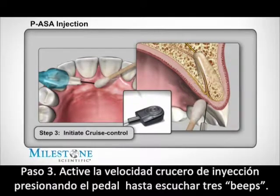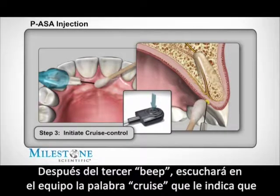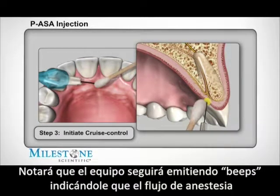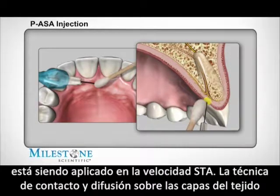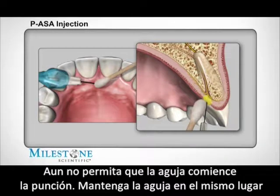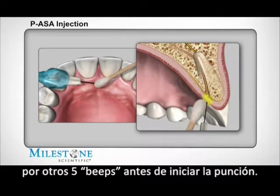Step 3: Initiate cruise control by depressing the foot pedal and counting three audible beeps. After the third beep, the STA system will announce the word 'cruise.' Upon hearing this, remove your foot from the foot control pedal. The STA system will continue to beep indicating anesthetic solution is continuing to flow. Allowing anesthetic to contact and diffuse through the outer layers of tissues will produce a topical anesthetic effect, numbing the surface. Do not allow the needle to puncture the tissue at this time. Continue to allow the needle to stay on the surface for another five beeps before initiating needle penetration.